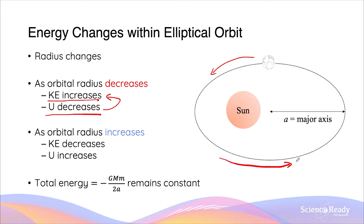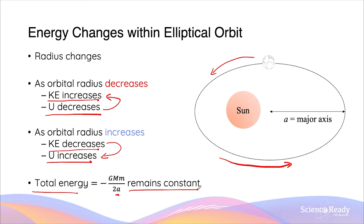As the planet is moving away from the sun and the radius is increasing, the opposite happens: kinetic energy decreases while gravitational potential energy increases, and kinetic energy is transformed into increasing gravitational potential energy. Regardless of whether the orbital radius decreases or increases, the total energy for an elliptical orbit — given by minus GMm over 2a, where a is the semi-major axis — remains constant. This is a similarity with circular orbits: total energy remains constant even though kinetic and potential energy change throughout the orbit.